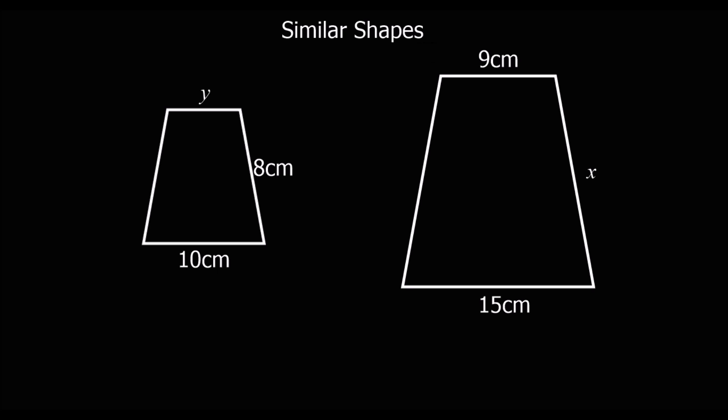Okay, pause the video and give this one a go. So the first thing we need to do is work out the scale factor. Again, we've got the 15 and 10. That's the same length from the small shape and the big shape. So we've got the big one divided by the small one, and that's 1.5. So 15 divided by 10 is 1.5.